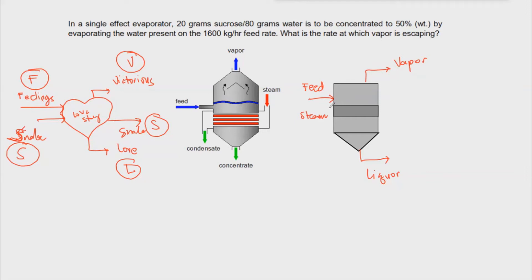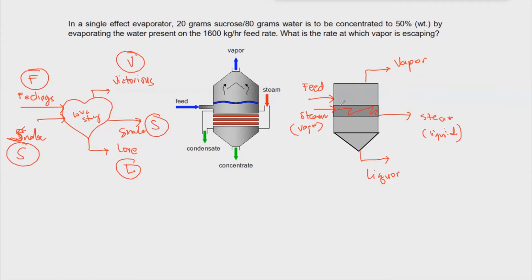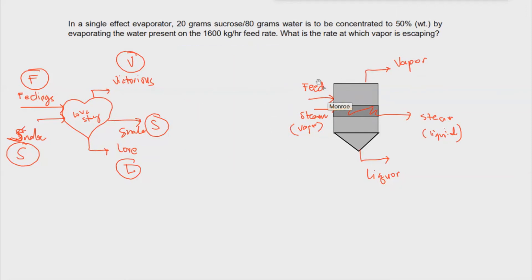The steam enters the heating medium section and then just passes through and exits as a condensate — still hot. Sometimes it's condensed, sometimes not, but usually it is condensed. If it's not condensed, that steam is reused in another part of the process. The vapor phase here is the steam; and separately we have the vapor coming out of the evaporator body. So just remember: feed enters, becomes liquor by evaporating a certain amount of water, and steam is the heating medium without direct contact with the feed.